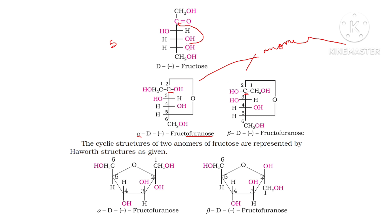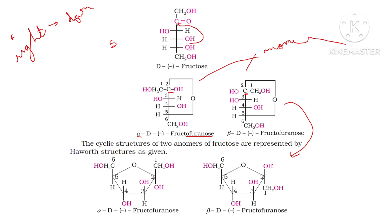Carbon 2 is the anomeric carbon. When converting from Fischer to Haworth projection, groups on the right-hand side go down the plane. For carbon 2, the CH2OH group is on the right-hand side so it goes down the plane, while the OH group is on the left-hand side so it goes above the plane.